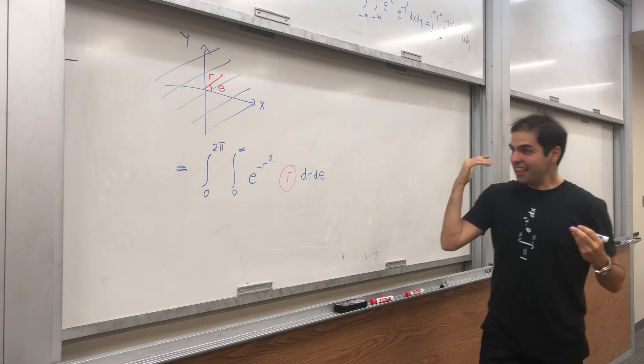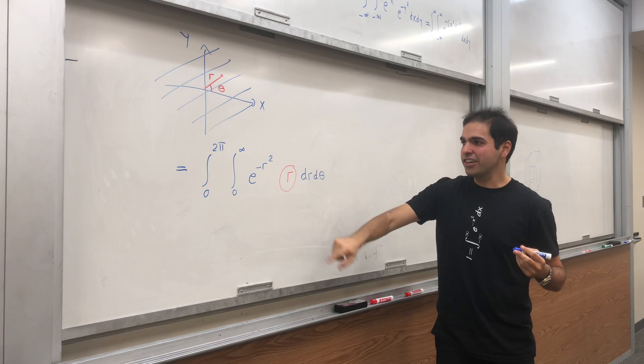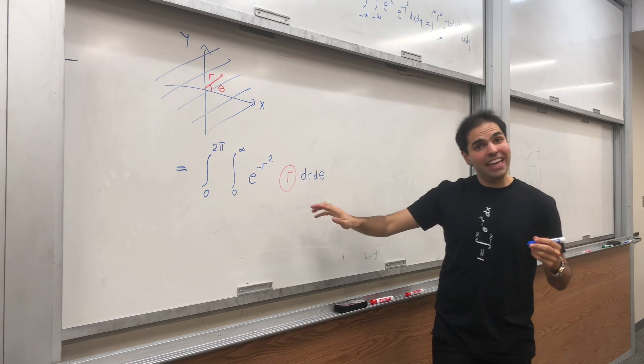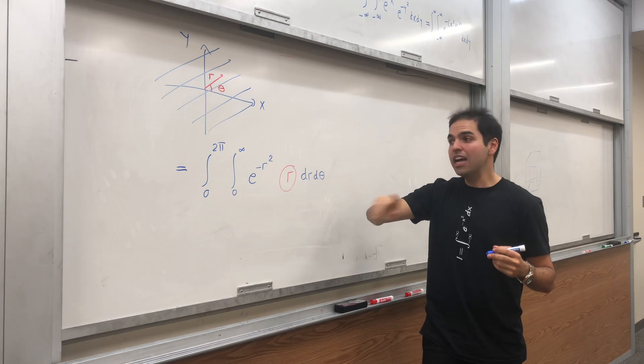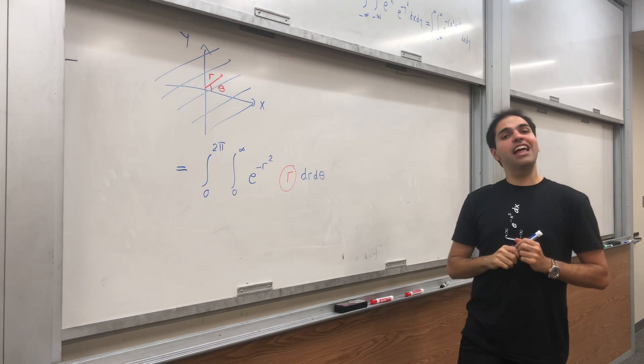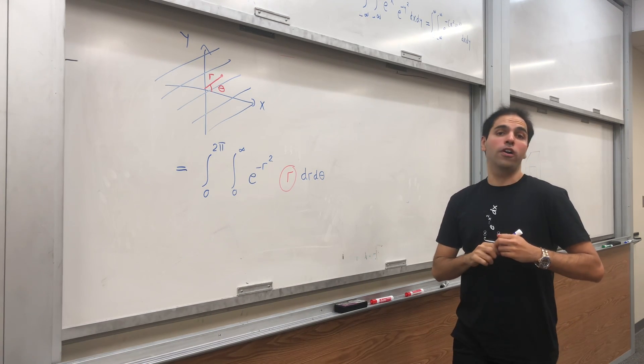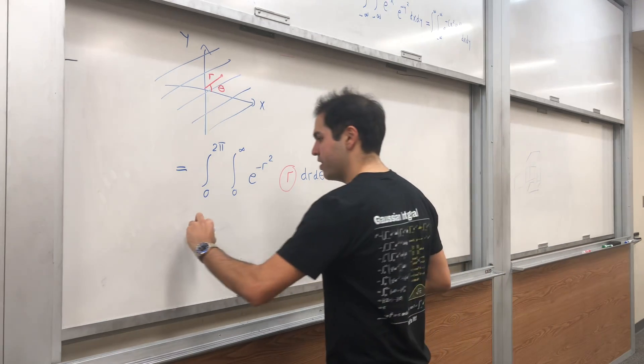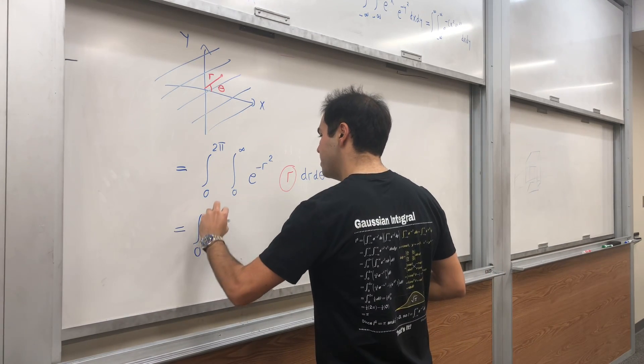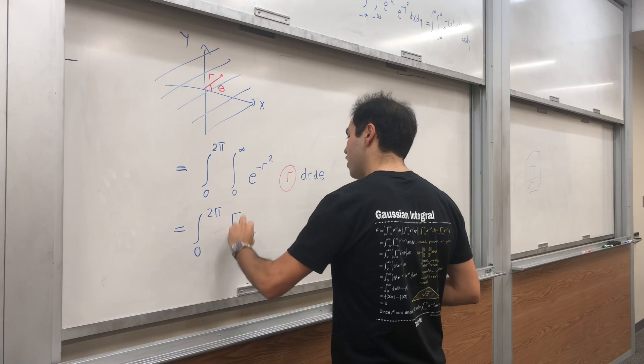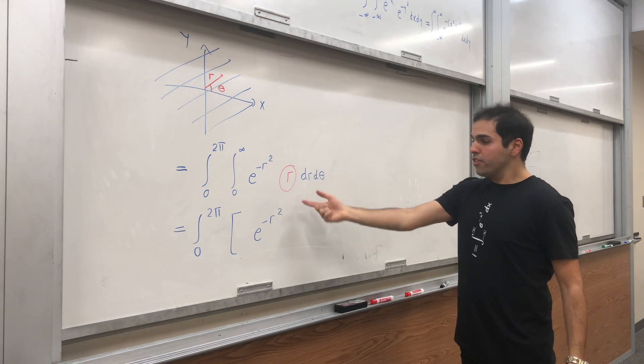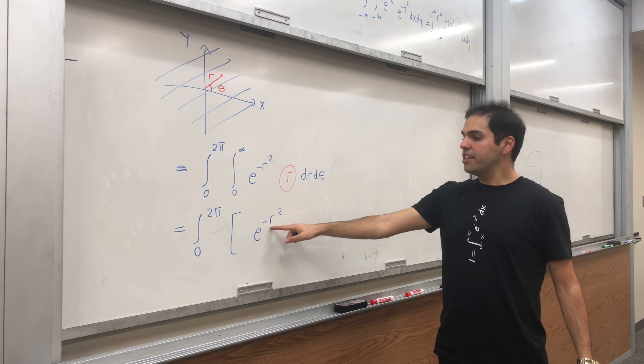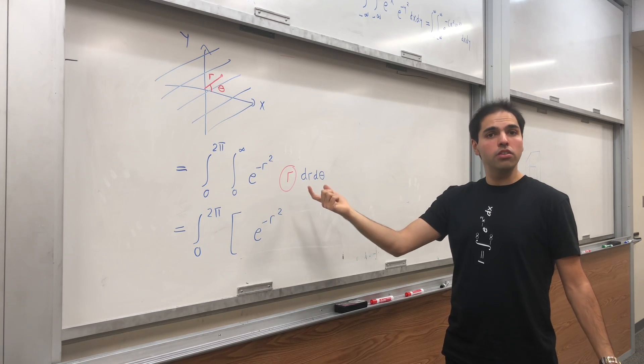And this is the thing that saves us here. Because wow, we cannot find an antiderivative of e^(-r²), we can find an antiderivative of r·e^(-r²). Because this becomes integral from zero to infinity of, let's see, e^(-r²)—if you differentiate this you get -2r·e^(-r²).